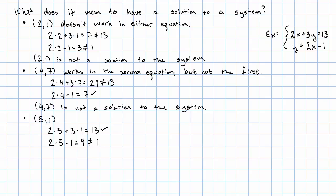So 5, 1 works in the first equation, but not in the second. Therefore, 5, 1 is not a solution to the system.